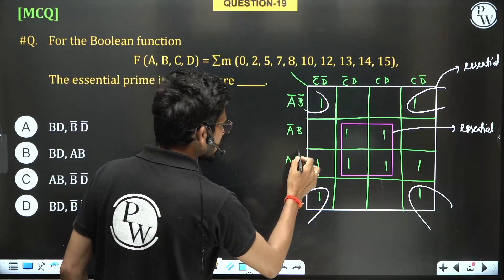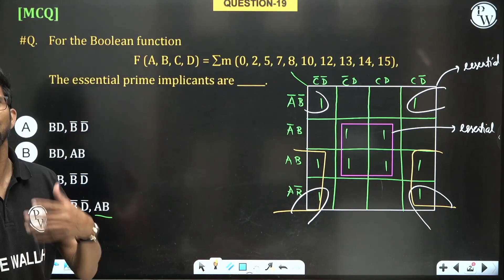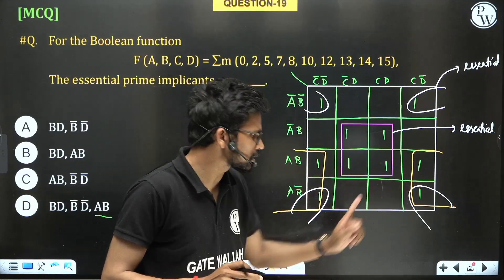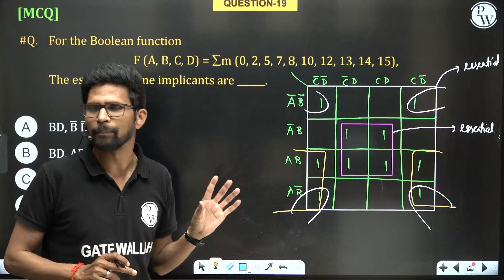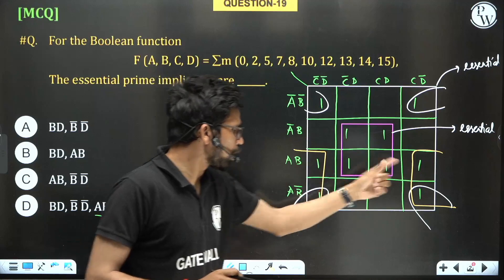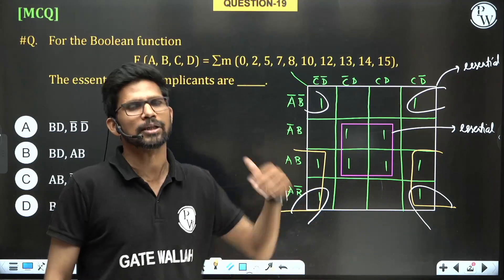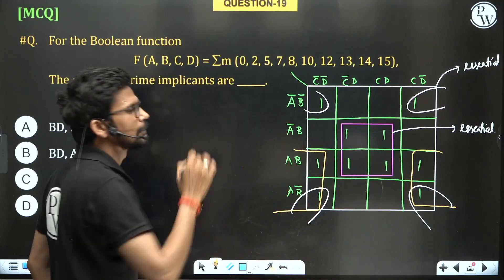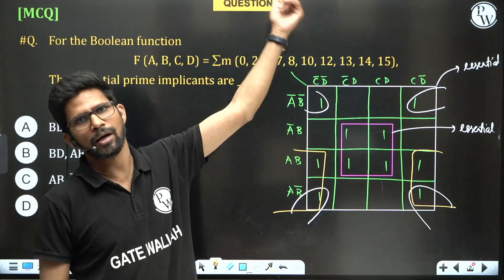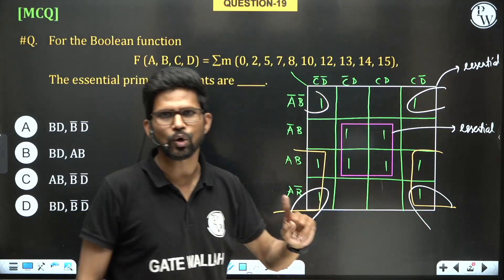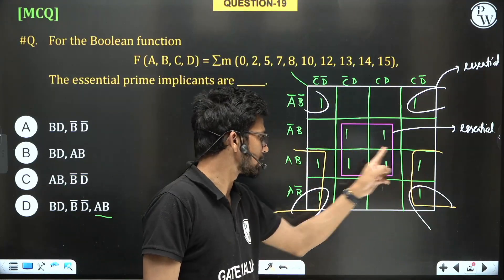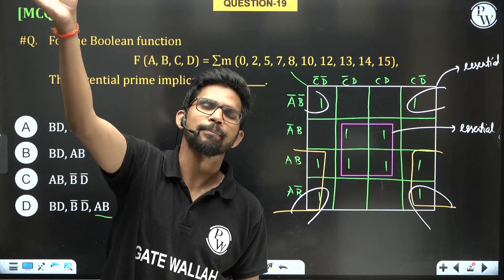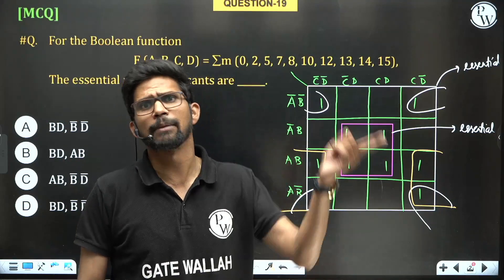This third prime implicant is non-essential. Now consider the fourth prime implicant — this sideways one. It has four ones. These two ones can be covered by the white quad implicant, and the remaining two ones can also be covered by the horizontal prime implicant. So all four ones can be covered by other prime implicants, and no single 1 exists that is covered only by this prime implicant. Therefore, this prime implicant is also non-essential.